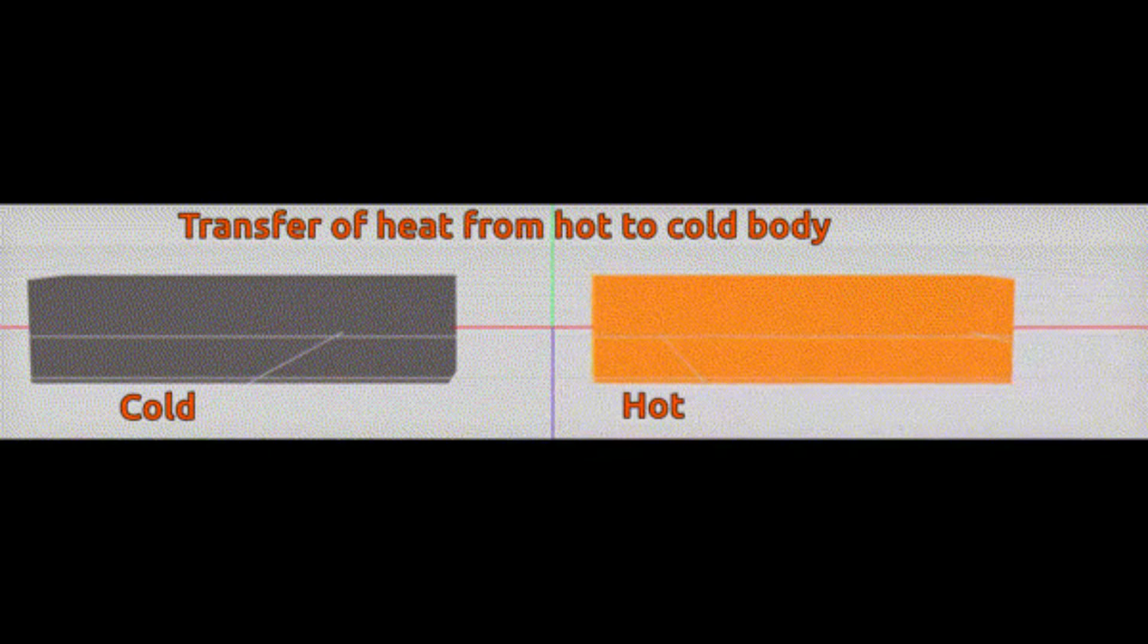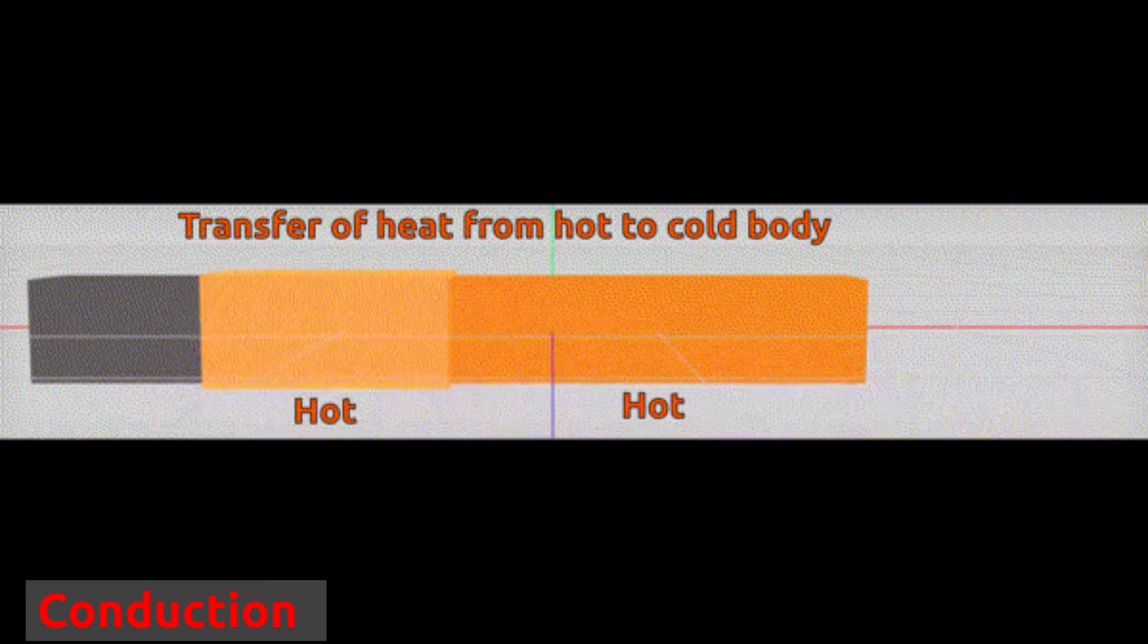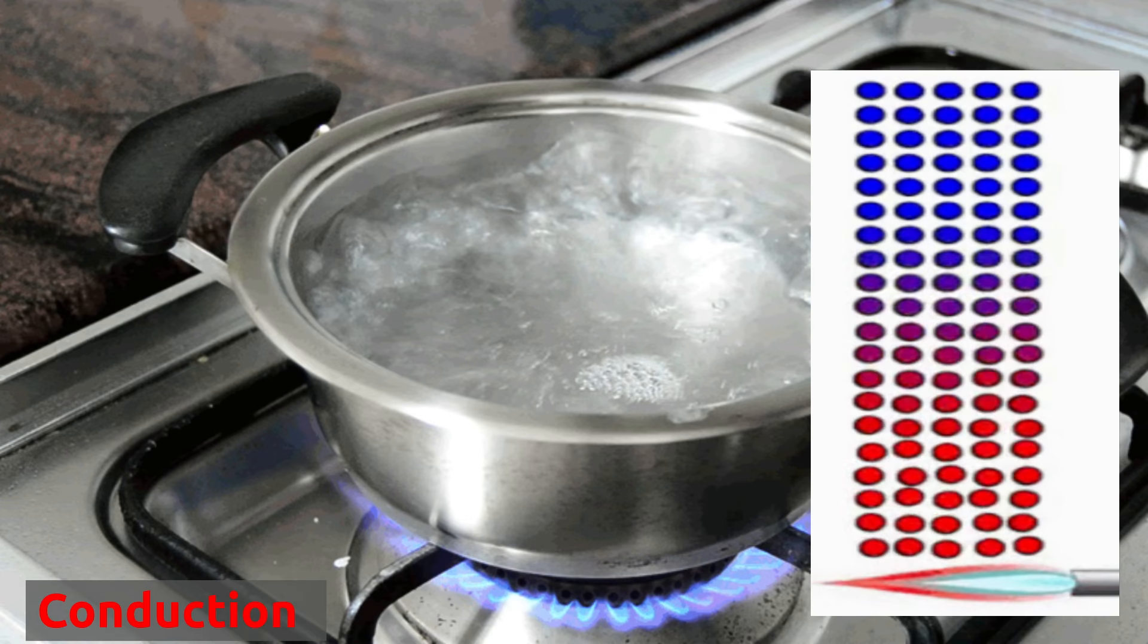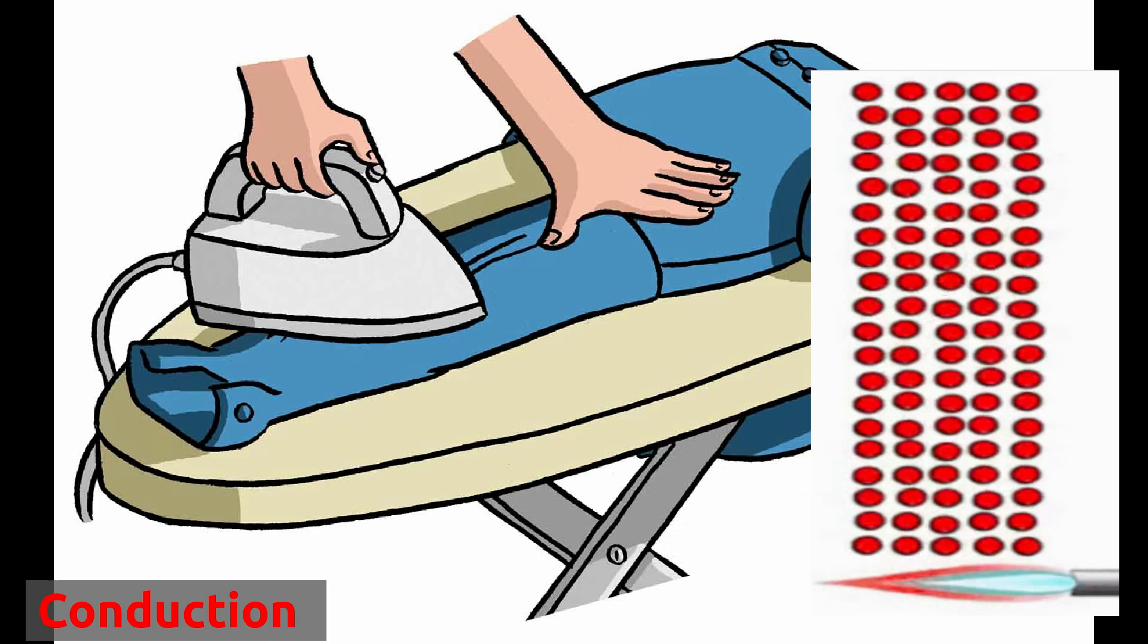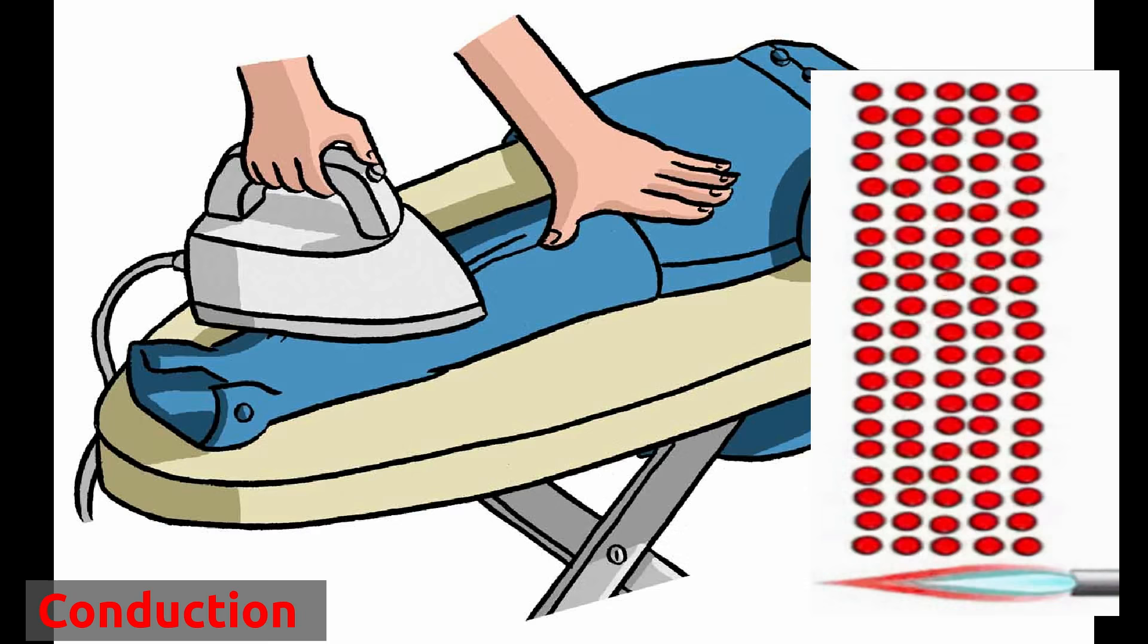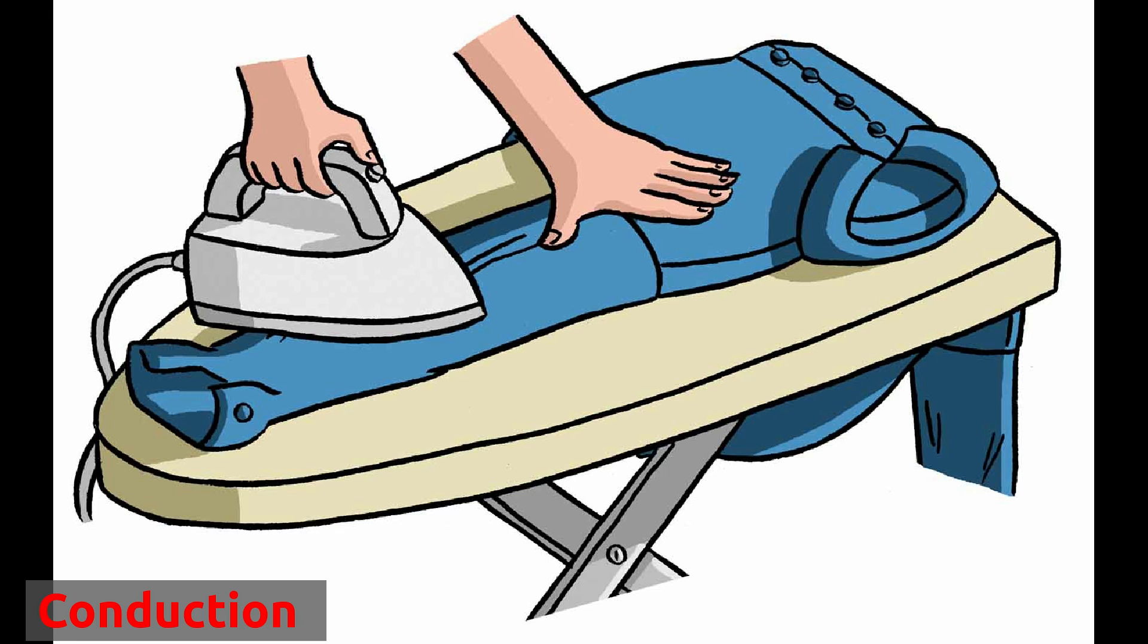When heat from one object gets transferred to another object by direct contact, it is known as conduction. For example, when we make tea, heat from the stove gets transferred to the steel pan because of direct contact, and thus this is conduction. When you iron your clothes, heat energy gets conducted from the iron to the clothes.